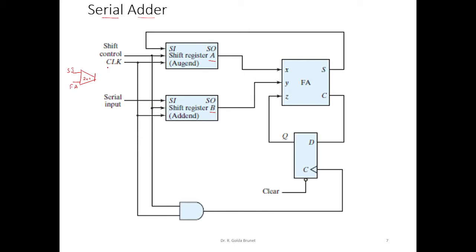We have the system clock and the shift control. Both of them will be supplied to an AND gate, and the result of the AND gate will be supplied to the shift register for performing the serial shift. Similarly, that circuit will also be available here in shift register B to perform serial shift.